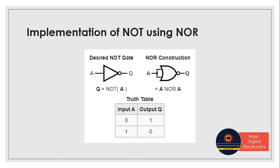First we'll start by seeing the implementation of NOT gate using NOR gate. To construct a NOT using NOR, we need to join the inputs of a NOR gate. As we know, a NOR gate is equivalent to an OR gate followed by a NOT gate, and joining the inputs of the NOR gate eliminates the OR functionality from the circuit. That means we are only left with NOT functionality, so joining the inputs of a NOR gate gives us the same functionality as a NOT gate.